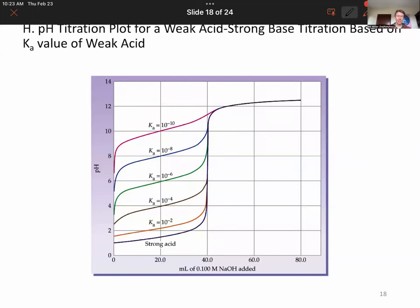Now let's talk about the pH titration plot for a weak acid-strong base titration based on the Ka value of the weak acid. You can see in this plot we've got Ka values ranging all the way from very large for a strong acid all the way up to Ka value of 10 to the minus 10.